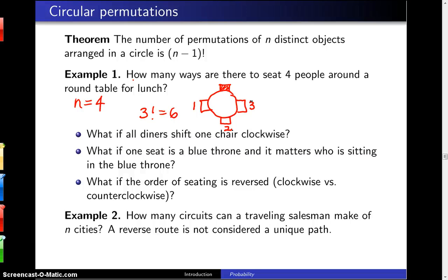Let's ask this question. If all of the diners shift one chair clockwise, so if we move them all around this way clockwise, then is that a different circular permutation? And the answer to this one is no, this is not a new circular permutation.